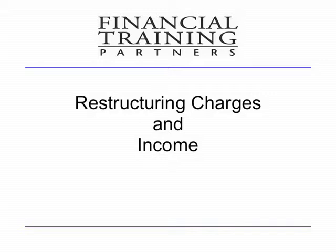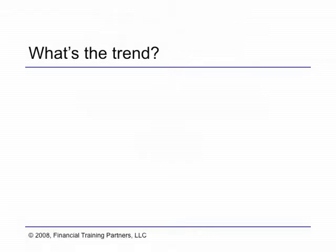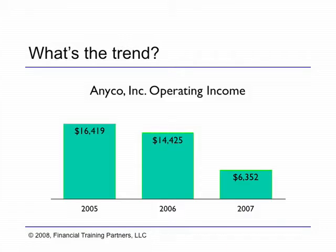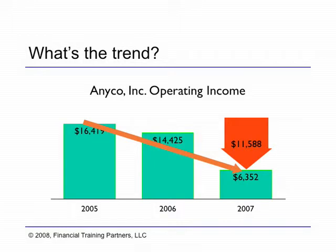Why do restructuring charges matter? A restructuring charge can have a big effect on your view of a company's operating results. This chart shows the operating income for a company called Enneco. You can see that the trend in Enneco's operating income is downward. But Enneco's results in 2007 include an $11,588,000 restructuring charge, and the charge is the reason for the drop in operating income that year.